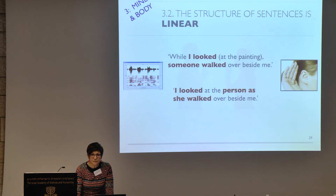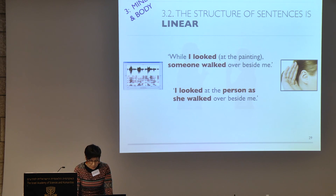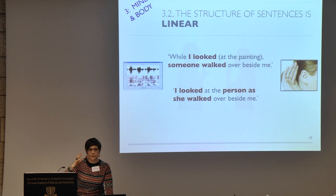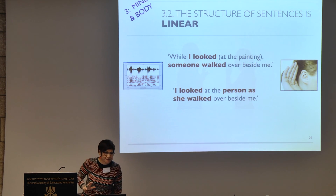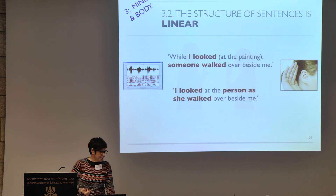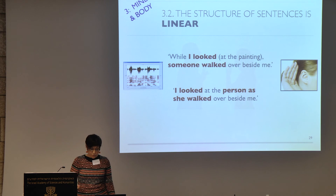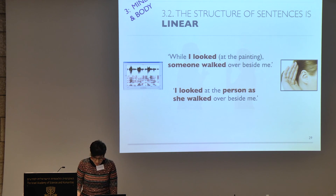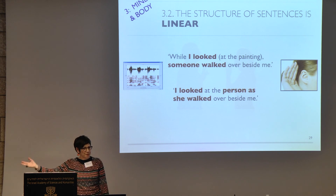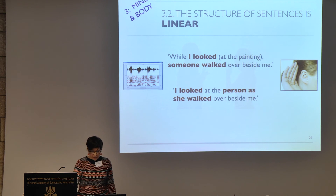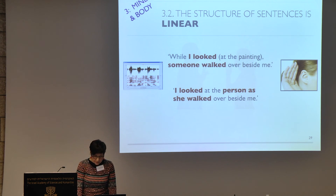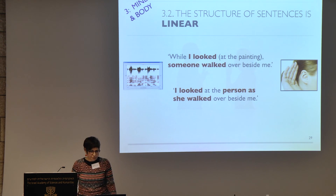The second phenomenon is linearity. Because of the nature of the vocal tract and the hearing apparatus, we have no choice but to line things up linearly. Even if the phenomena we're trying to talk about occur simultaneously, we can't convey them simultaneously — we have to convey them one after the other. A sentence like 'while I looked at the painting, someone walked over beside me' requires that whole long sentence said one part after the other, describing simultaneous events in a linear fashion, because there's no choice.